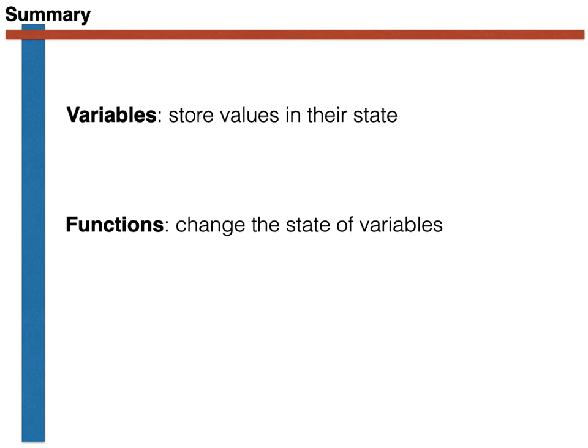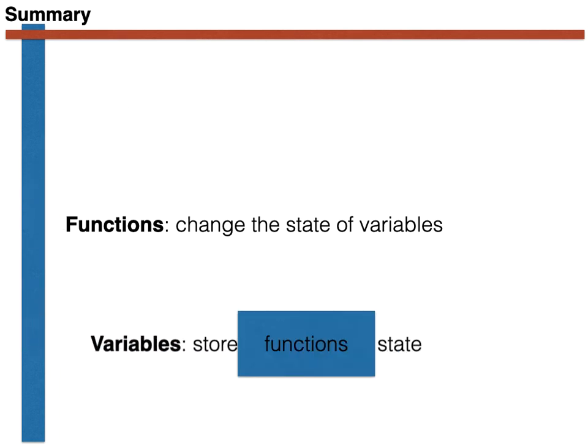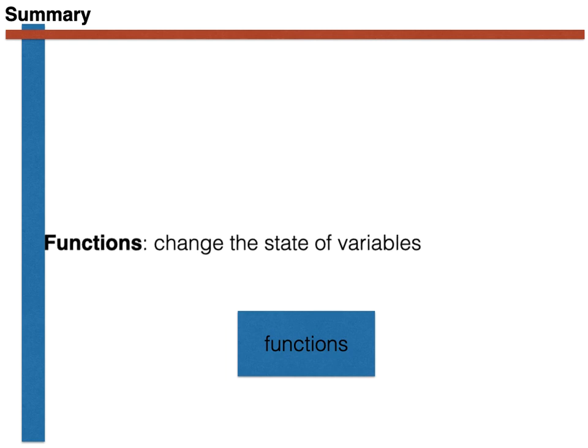To summarize then, we have introduced this distinction between variables and functions and stated that variables store values while functions change the state of variables. If we want to change the state of a variable we have to pass it through a function as shown here. What we have seen here however is that because functions are a set of instructions we can also pass functions through functions and thus change the instructions that are issued within them.